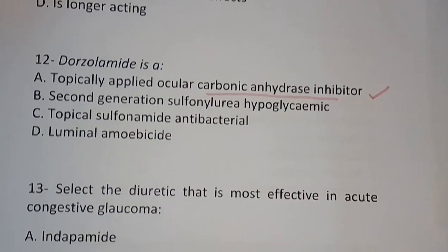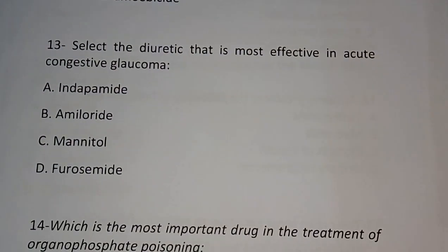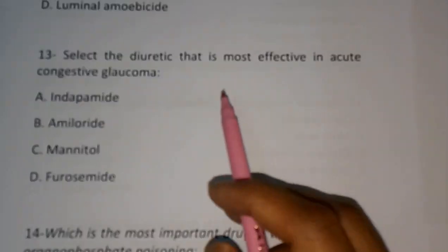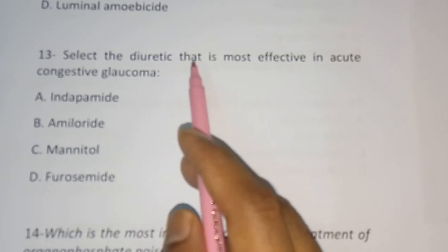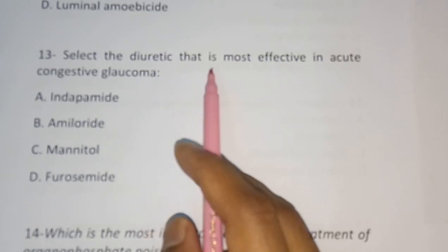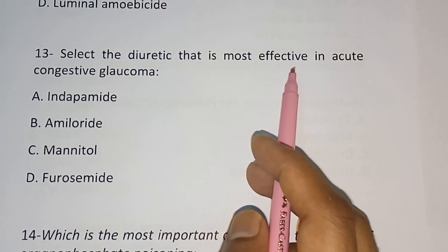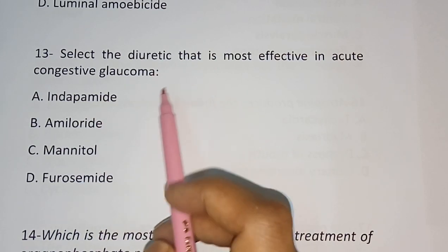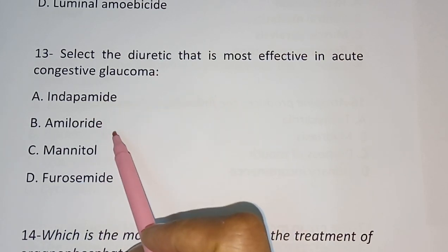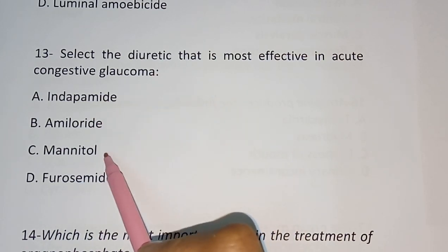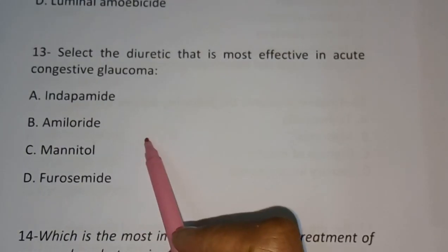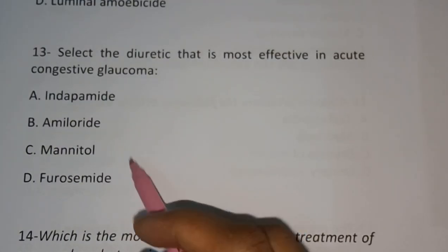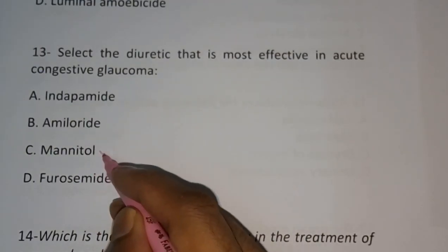Question number thirteen: Select the diuretic that is most effective in acute congestive glaucoma — (A) indapamide, (B) amiloride, (C) mannitol, (D) acetazolamide. The correct answer is option C — mannitol.